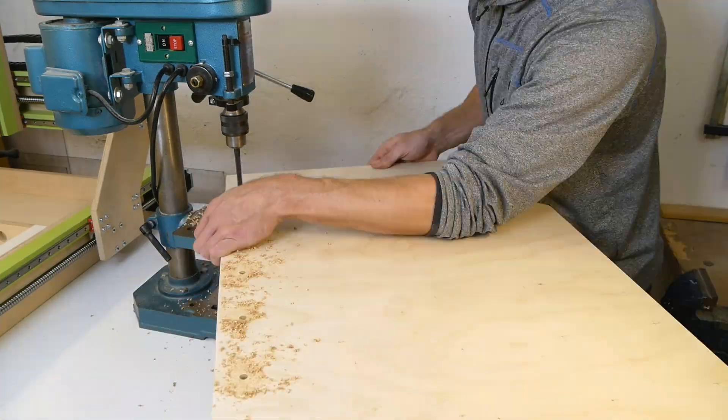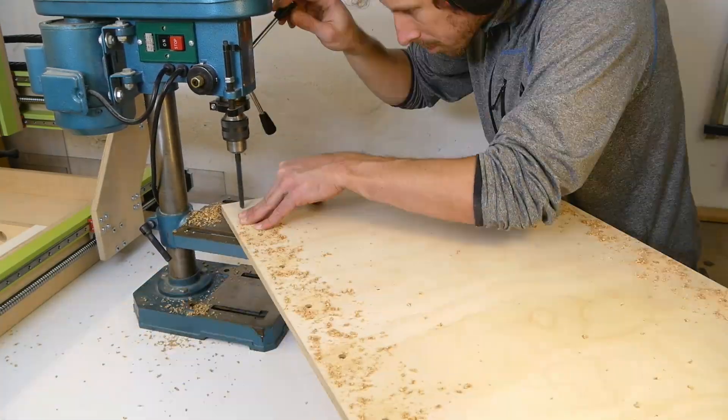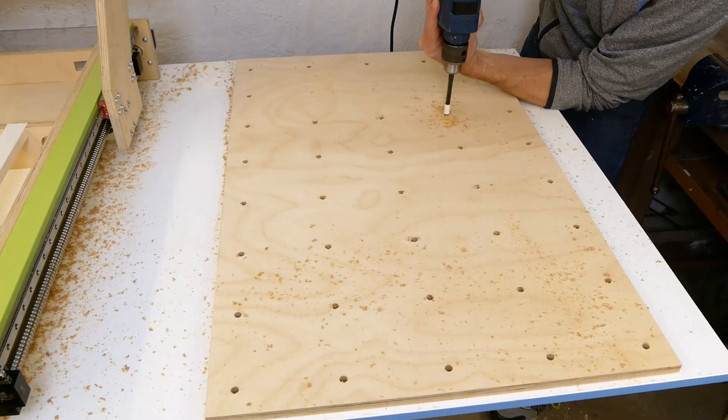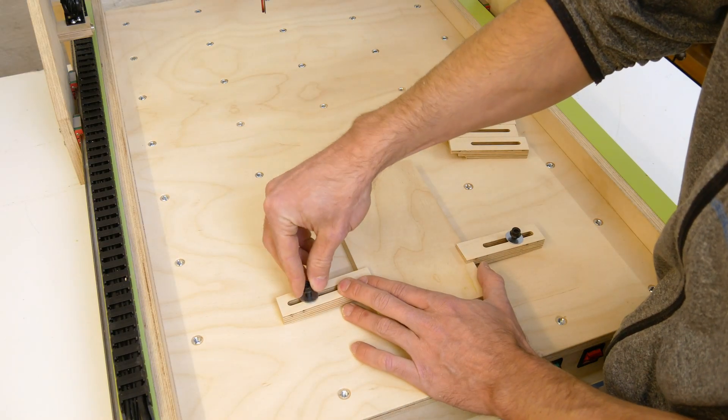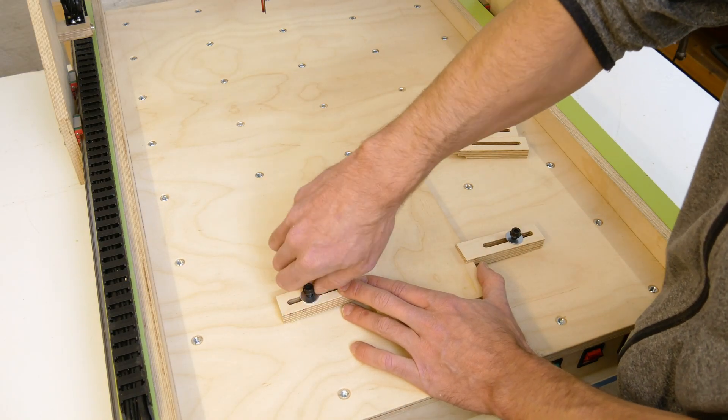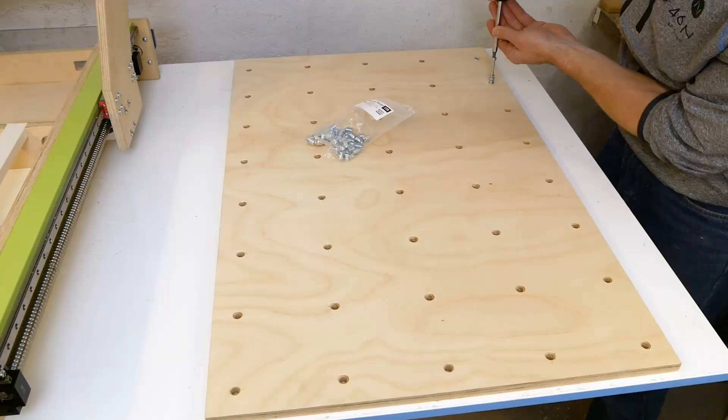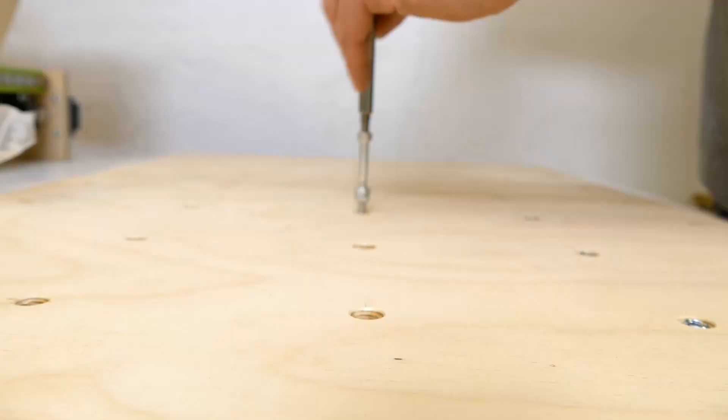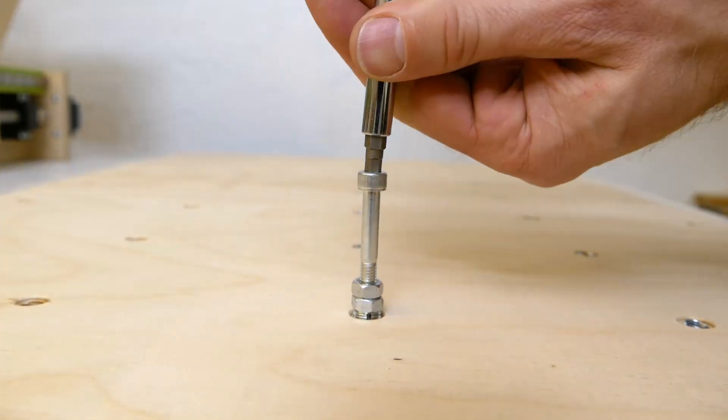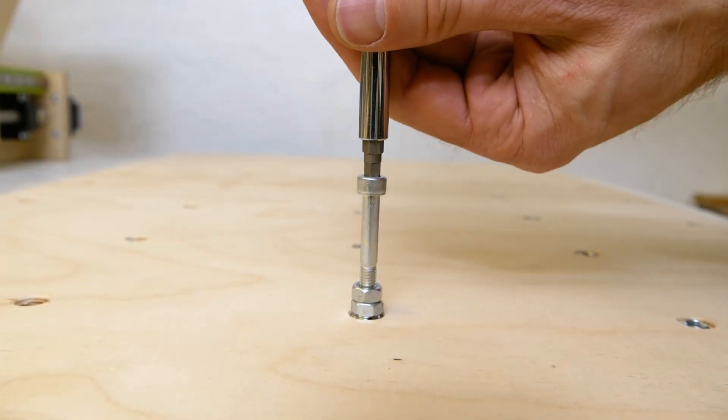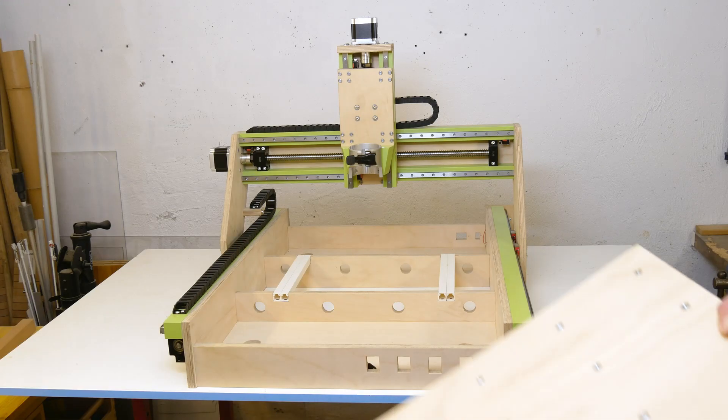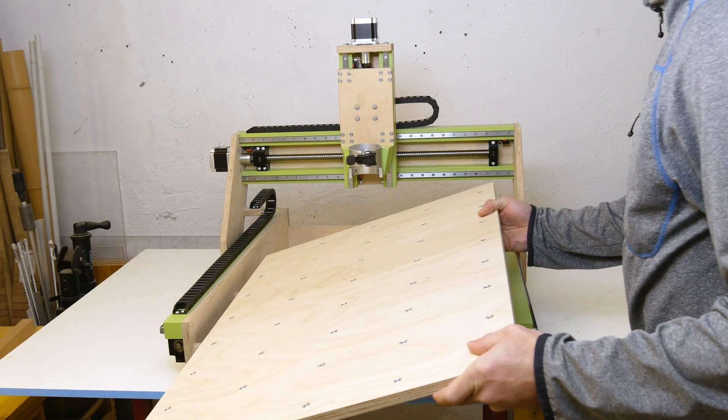The final missing frame piece was the machine bed. The plan was to have a series of threaded inserts that would allow to fix a spoil board or a working piece in place by using holding down clamps. I therefore drilled a series of evenly spaced holes in which I screwed the threaded inserts for M6 screws. When this was done, the machine bed could be put in place and the machine frame was finished.